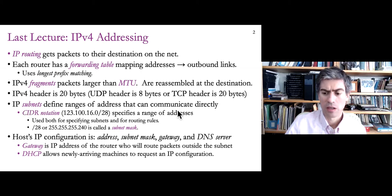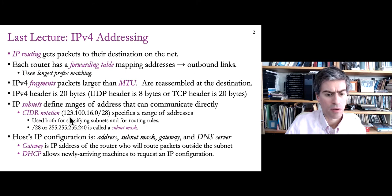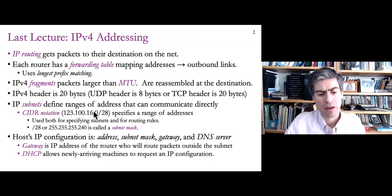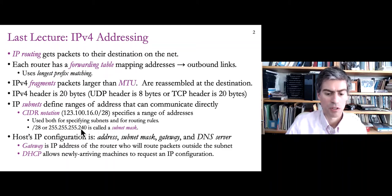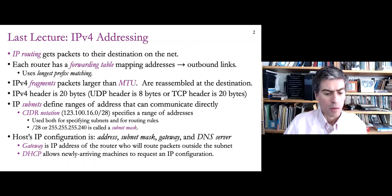We spent a little time looking at IP subnets. A subnet is a range of addresses that can communicate directly — a range of contiguous addresses — defined usually with CIDR notation, which gives the IP address of the first address in the range, then a slash number indicating how many high bits must remain constant. The smaller this slash number, the bigger the range; the bigger the number, the smaller the subnet. This CIDR notation is used for specifying both subnets and routing rules, for ranges based on powers-of-two size.